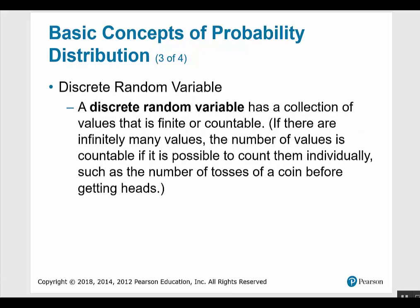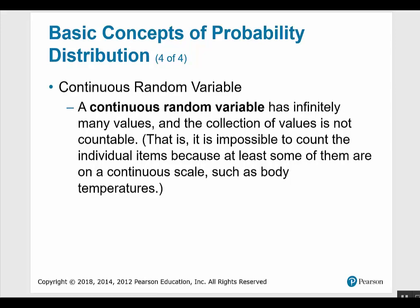A discrete random variable has a collection of values that is finite or countable. If there are infinitely many values, the number of values is countable if it is possible to count them individually, such as the number of tosses of a coin before getting heads. A continuous random variable has infinitely many values and the collection of values is not countable — it's not possible to count the individual items because at least some of them are on a continuous scale, such as body temperature.